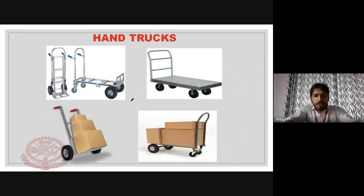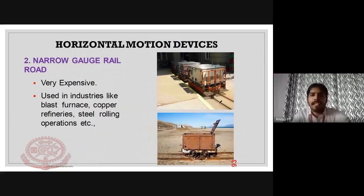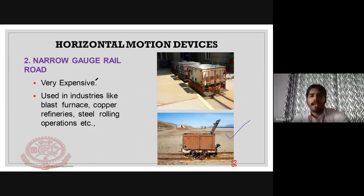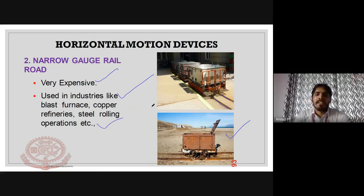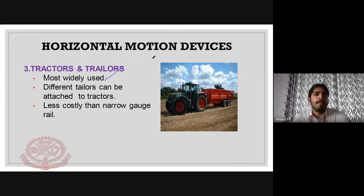Another horizontal motion device is the narrow gauge railroad. It is used in various industries like blast furnace operations, copper refineries, steel rolling operations, and food processing industries. It is however more expensive than other simple horizontal motion devices.